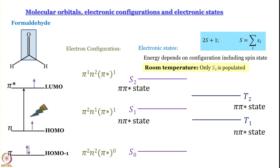Another very important point: the energy gap between S0 and S1 is quite large — on the order of electron volts. Using the Boltzmann distribution, S1, S2 etc. are not going to be populated at room temperature. Only S0 will be populated at room temperature. S1, S2, T1, T2 can only be populated by shining light or using other sophisticated techniques.